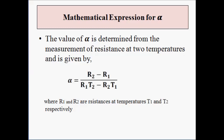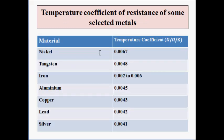Here are some selected metals used for fabrication of RTD with their temperature coefficient alpha values: nickel — 0.0067, tungsten — 0.0048, iron — 0.002 to 0.006, aluminium — 0.0045, copper — 0.0043, lead — 0.0042, and silver — 0.0041.